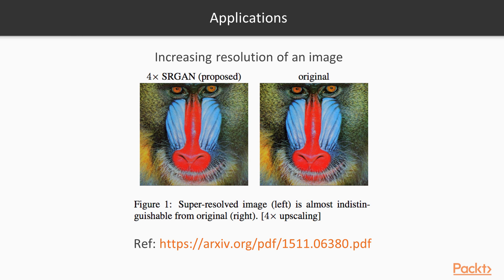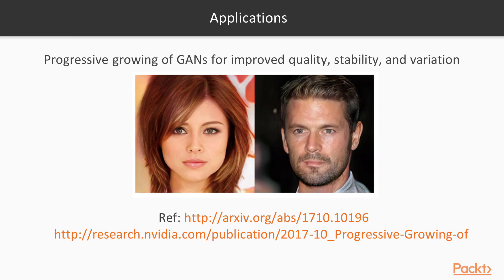Another application is to increase the resolution of an image — a way to generate images of super high resolution, called upsampling. Generative adversarial networks are very good at capturing details. This paper deals with this approach, and there's another very similar approach made by NVIDIA Research that does exactly the same thing — GANs can actually generate images of celebrities' faces.